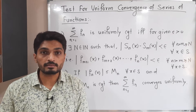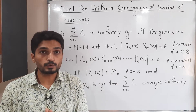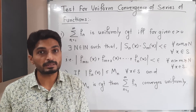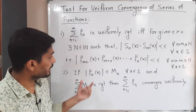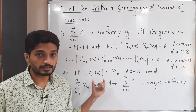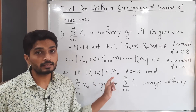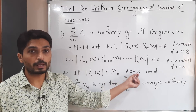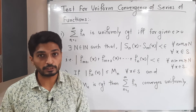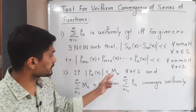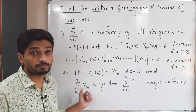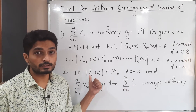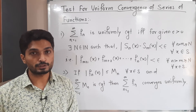The second test, which is more interesting, is called the Weierstrass M-test. Suppose we have a series of functions ΣFn where each Fn is defined on the non-empty subset S of R, and |Fn(x)| ≤ Mn, where Mn is a real number, for all x ∈ S and all n ∈ ℕ. If the corresponding series of real numbers ΣMn is convergent, then ΣFn is also uniformly convergent.